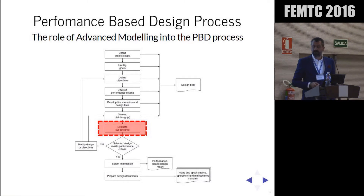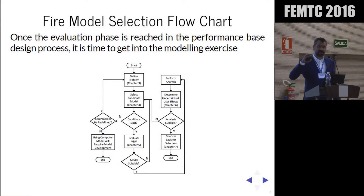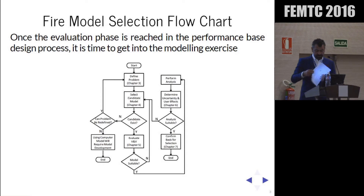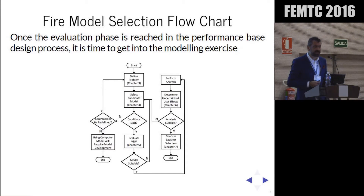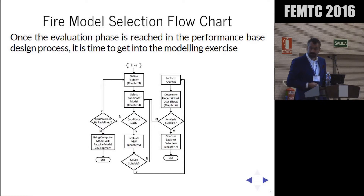You evaluate through your model — which can be algebraic, zone model, or CFD model — and you see if your design is okay or not, then come back to evaluate again. Once in the evaluation part, we need to select the right model, following the SFPE guidelines for substantiating a fire model for a given application. The process involves defining a problem, selecting a candidate model — whether evacuation, fire, radiation, flame spread, or whatever — and if it exists, proceeding to validation and verification before using that model.